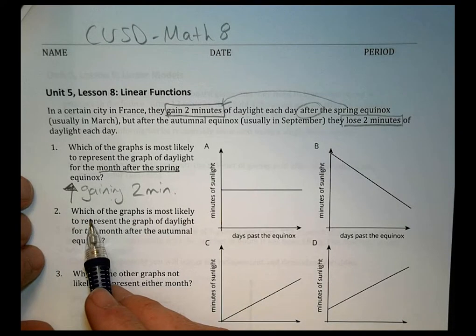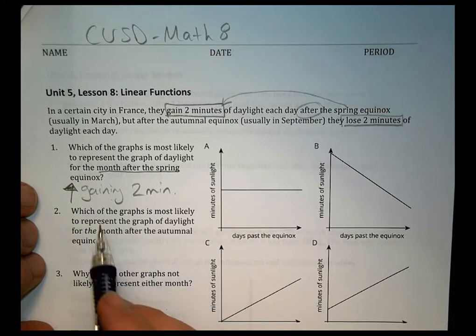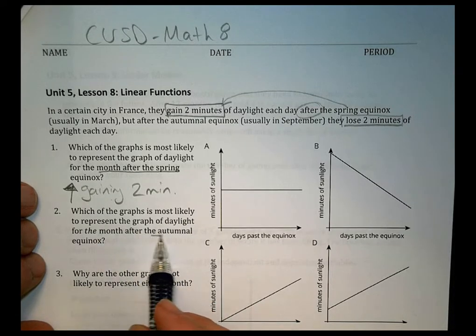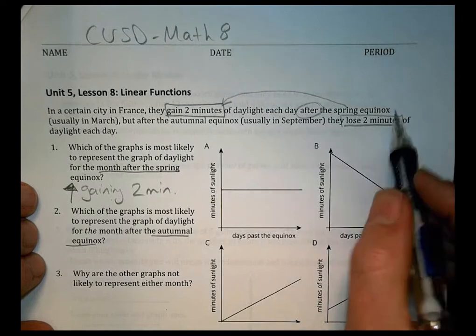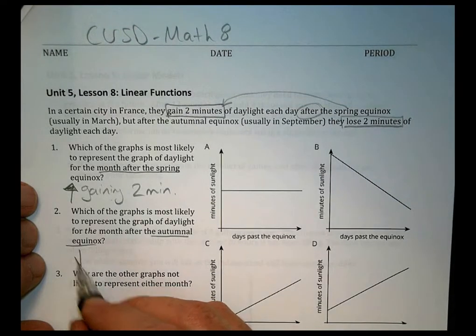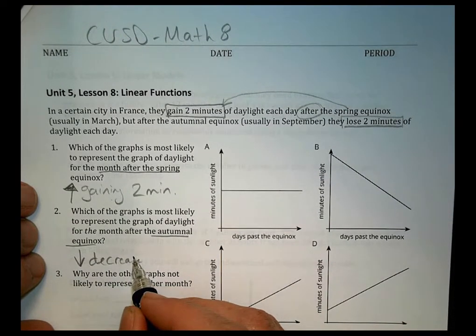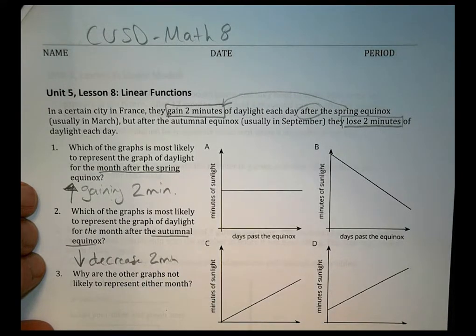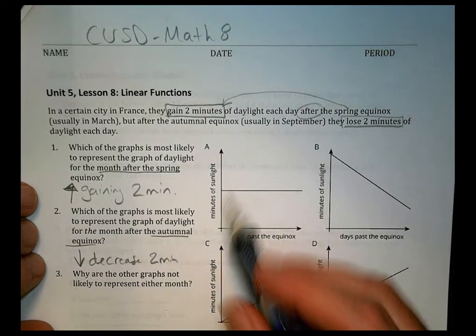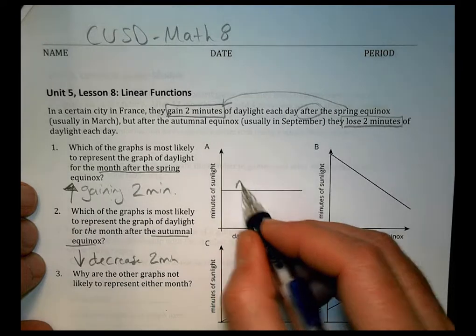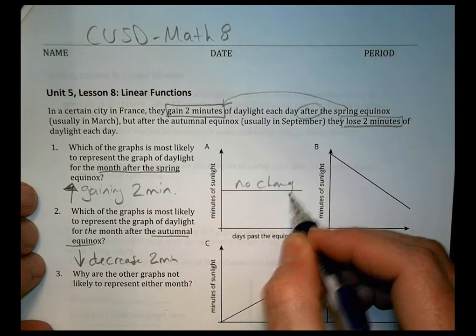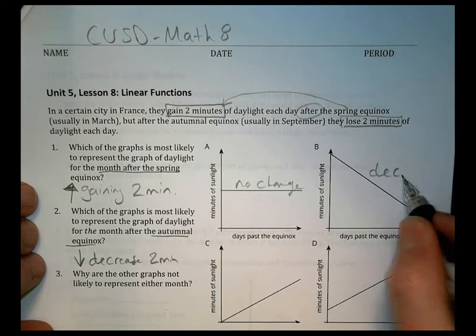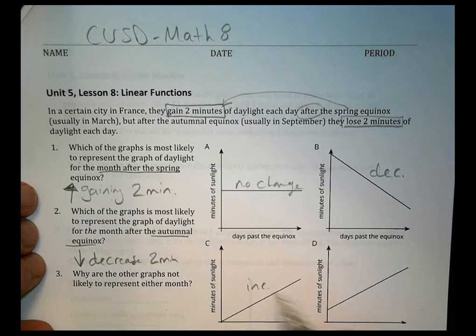For two, it says which of the graphs is most likely to represent the graph of daylight for the month after the autumn equinox? In autumn we're losing, so we should see some sort of decrease in the amount of light with time. Looking at what's happening here, we see so far we have one where there's no change, we can see a decrease happening here, we have an increase happening here, and an increase happening here.